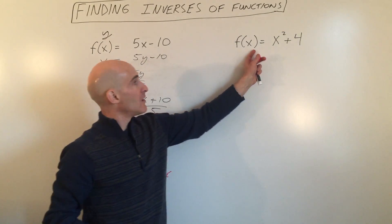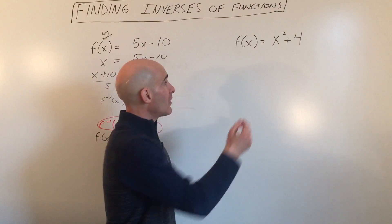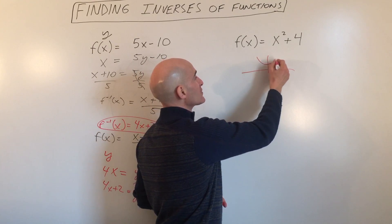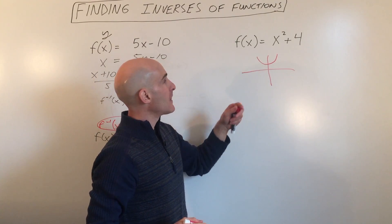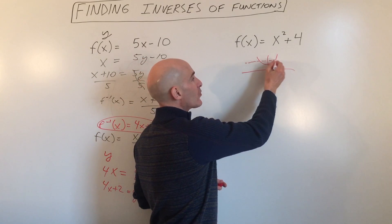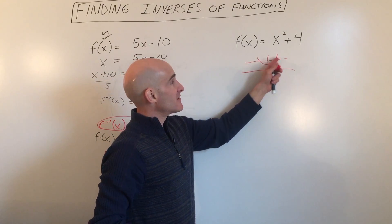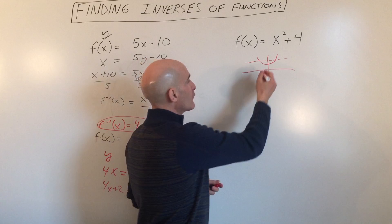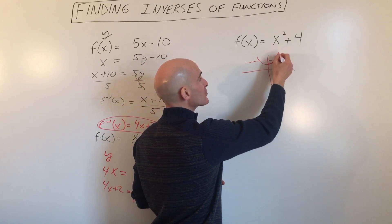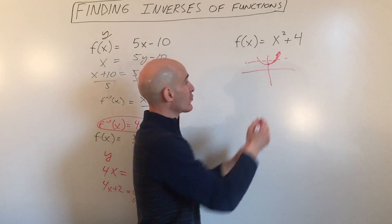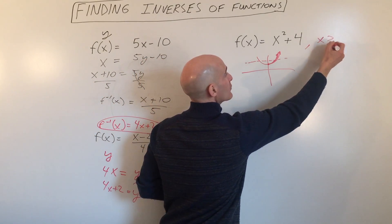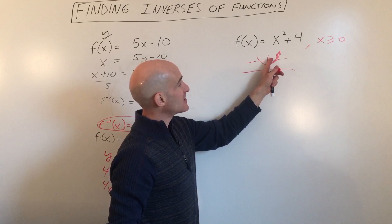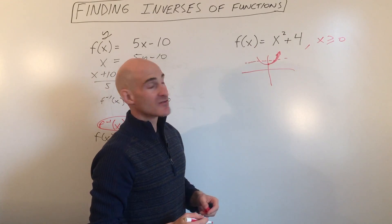Last example: y equals x squared plus 4. This is a parabola that's been shifted up 4. But you see how it fails the horizontal line test? That means this function doesn't have an inverse. But if we just look at half of this graph — say this right branch, where x is greater than or equal to zero — now it does pass the horizontal line test, it only crosses at most once. So now we can go ahead and find the inverse of this graph.